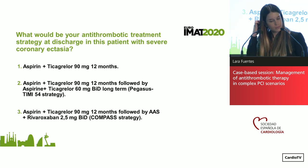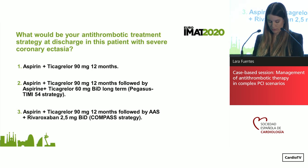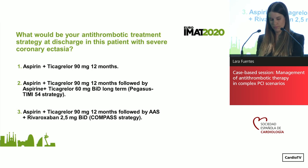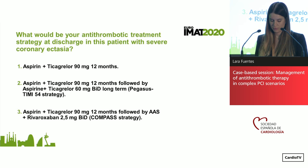The last question is related to the long-term treatment of this particular patient — a patient with severe coronary ectasia, stent thrombosis, acute coronary syndrome, and important thrombus burden during the acute syndrome. What is your antithrombotic treatment at follow-up? Option one: aspirin plus ticagrelor for one year. Option two: aspirin plus ticagrelor 90mg followed by aspirin plus ticagrelor 60mg long-term (PEGASUS strategy). Option three: aspirin plus ticagrelor for 12 months followed by aspirin plus rivaroxaban (COMPASS strategy).